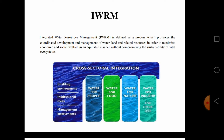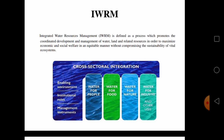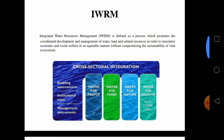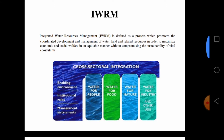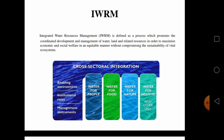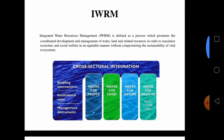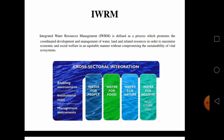Integrated water resource management is defined as the process which promotes the coordinated development and management of water, land and related resources. Water and land are linked to each other, and related resources include production, waste, surface and subsurface resources. All of this is in order to maximize the economy. It means if water is a source, something we are investing for water conservation — some productivity, some economic point of view, some efficiencies we are expecting — that should be for economic and social welfare in an equitable manner.